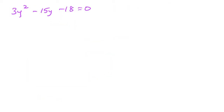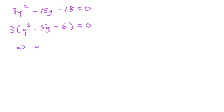I notice all the terms have a factor of 3, so I factor 3 out: 3 times y squared minus 5y minus 6 equals 0. Dividing through by 3, the equation I really need to solve is y squared minus 5y minus 6 equals 0.